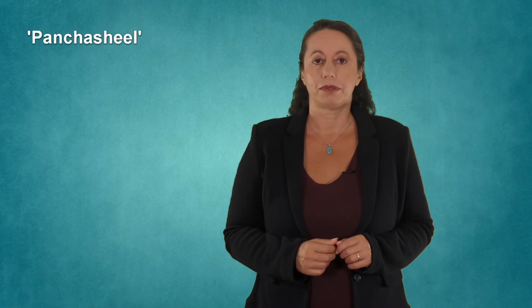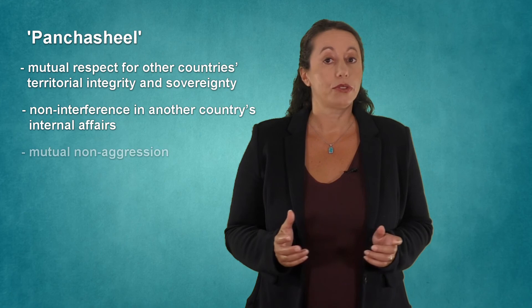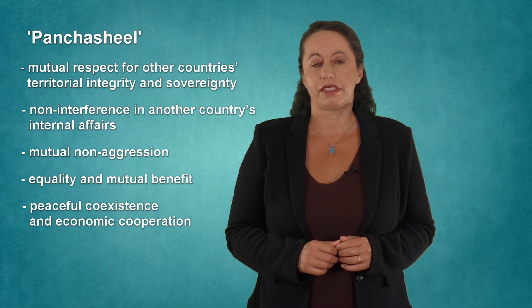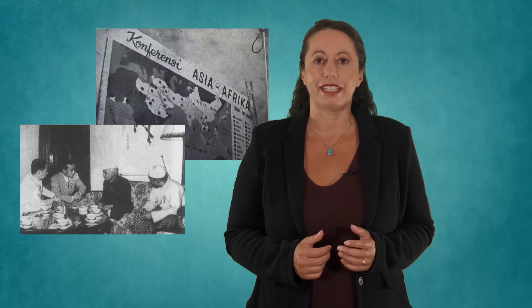He affirmed five principles for good international conduct, known as pancha seal, from the Sanskrit for five virtues. And these were mutual respect for other countries' territorial integrity and sovereignty, non-interference in another country's internal affairs, mutual non-aggression, equality and mutual benefit, and peaceful coexistence and economic cooperation. These ideas were further elaborated at the Bandung Conference in 1955, attended by many newly independent countries from Africa and Asia and came to be the core of the non-aligned movement which was formed in the 1960s. But Nehru remained committed to world federalism until his death in 1964. He had witnessed huge change in the world and he knew that further change was possible.